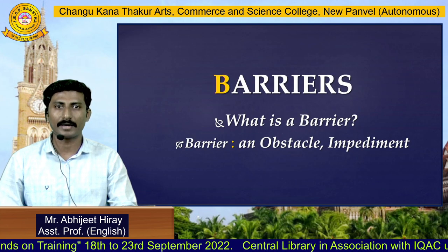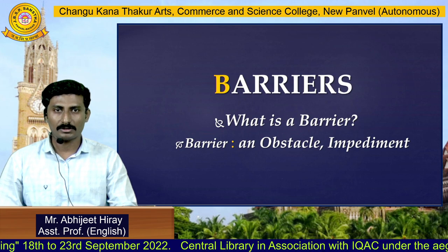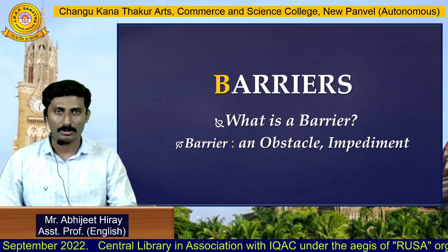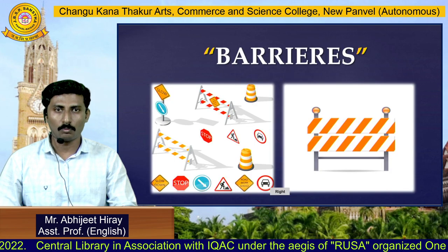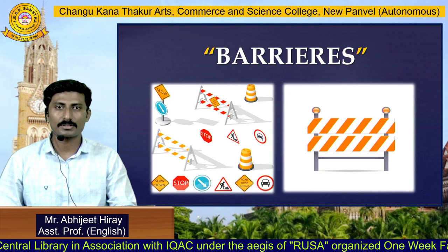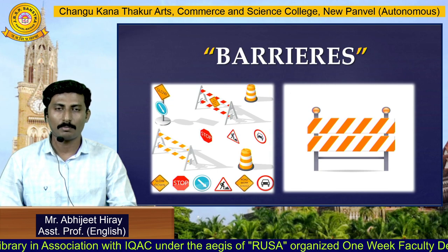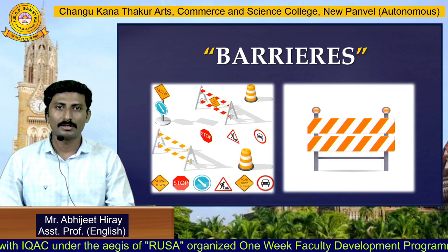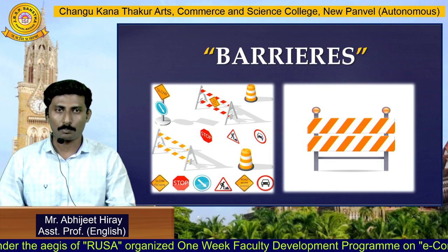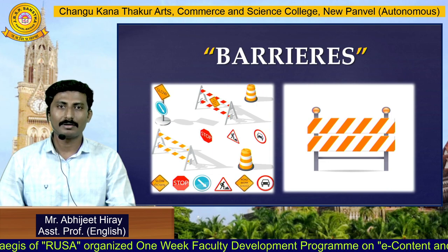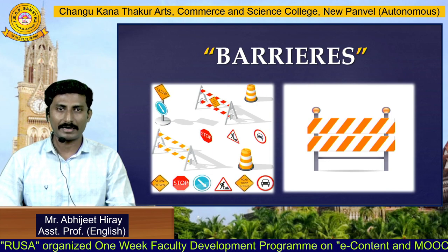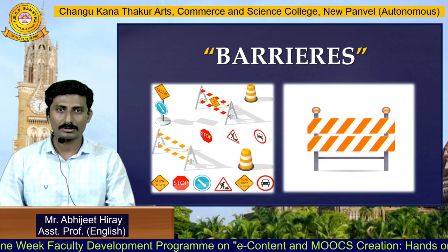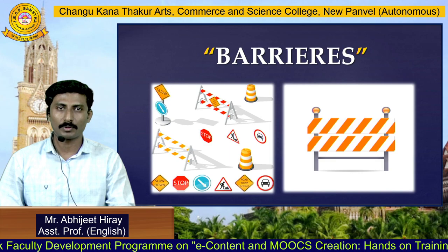Now, what is a barrier? A barrier is an obstacle or impediment. Let me show you an image to explain further. You might have seen on roads and pavements where police have used barricades to stop people. Stopping people from moving ahead is called a barrier or obstacle. That's why I have used images to make it simple for you.